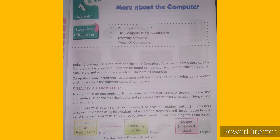What is a computer? A computer is an electronic device that executes instructions or programs to give information. It performs calculations and processes information with astonishing speed and accuracy. Computers take data and process it to give information. Computers carry out processes using instructions, which are the steps that tell the computer how to perform a particular task.